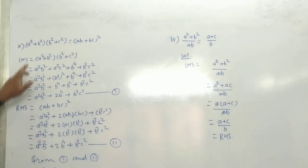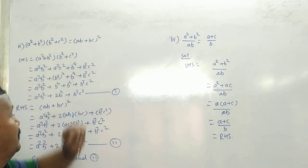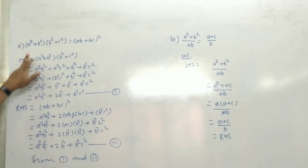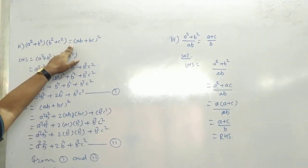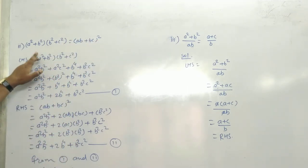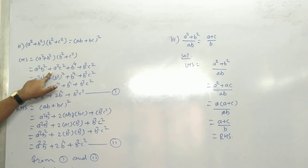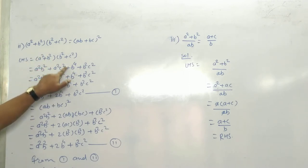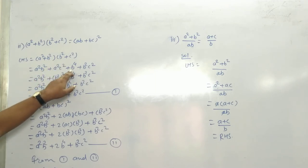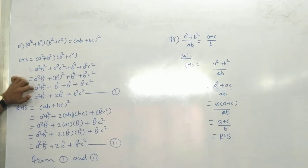Second part — इसमें क्या बता है? (A square + B square)(B square + C square) is equal to (AB + BC) whole bracket square। क्या बता है: A square plus B square into B square plus C square is equal to (AB + BC) whole square। पहले हम LHS solve करते हैं: (A square + B square)(B square + C square)।